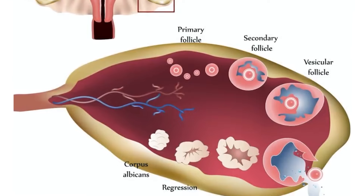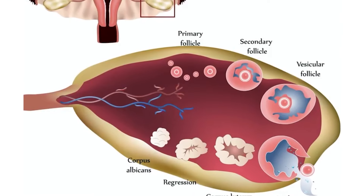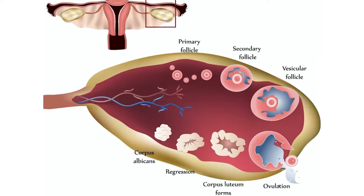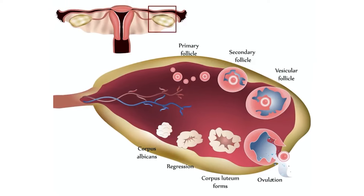Ovarian cysts are simply sacs that contain fluid in the ovary or on the surface of the ovary. They are usually seen on ultrasound scan. It is extremely common, and depending on where you are in your menstrual cycle, a cyst could be very normal. Yes, a lot of cysts are normal. By the end of this video you will know whether to worry about seeing an ovarian cyst on scan or whether you should just chill and be like, I'm good.